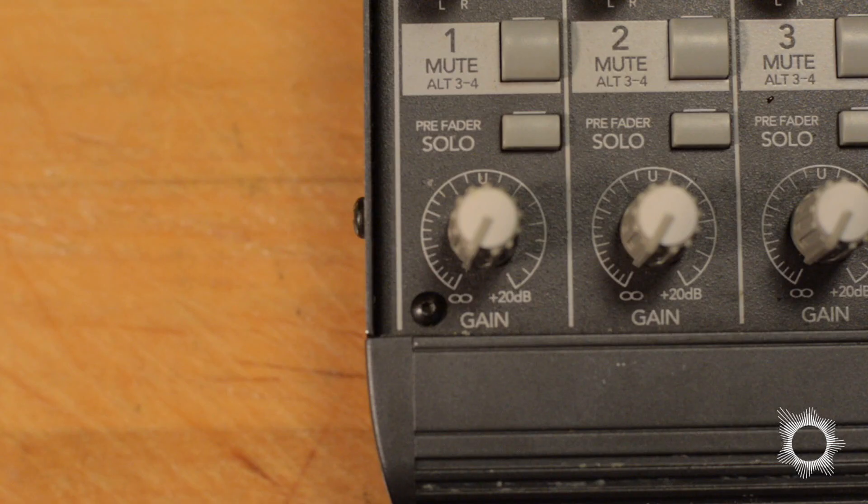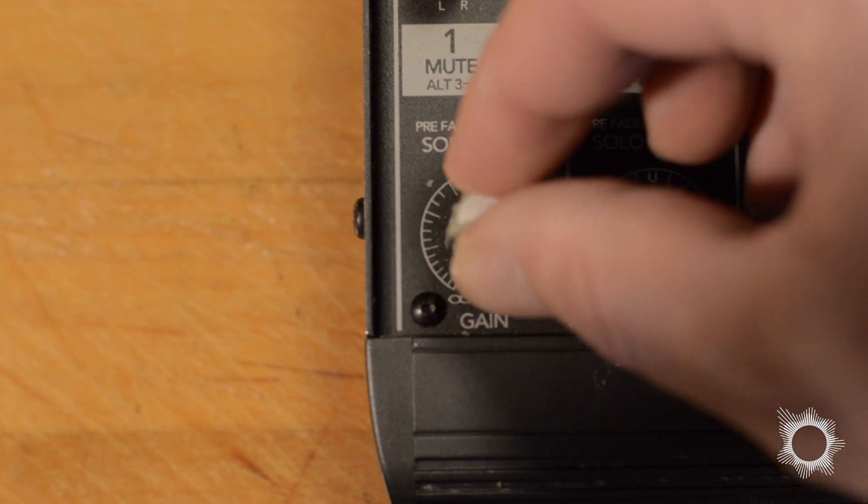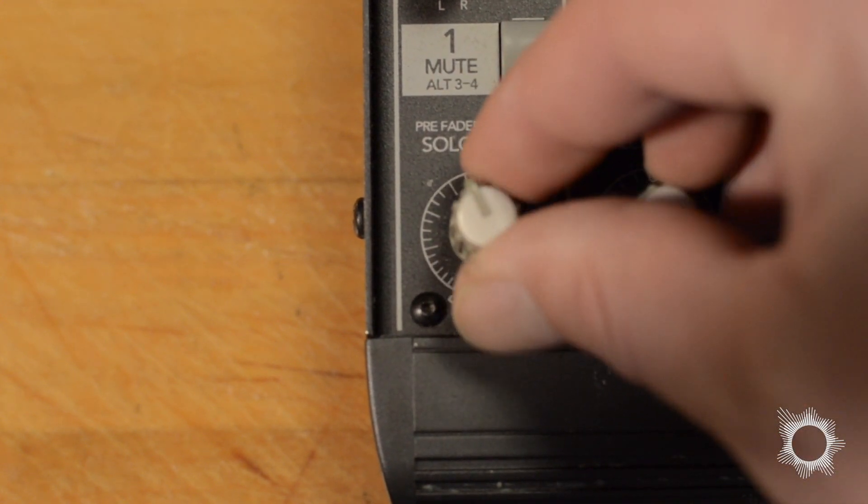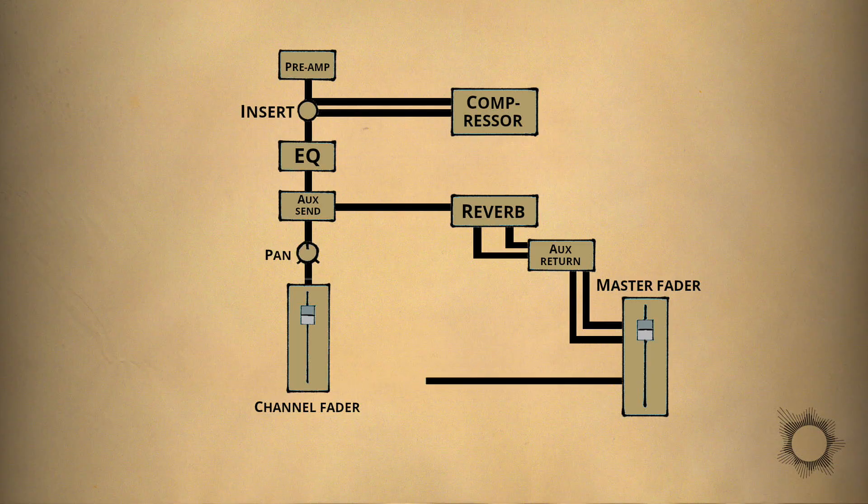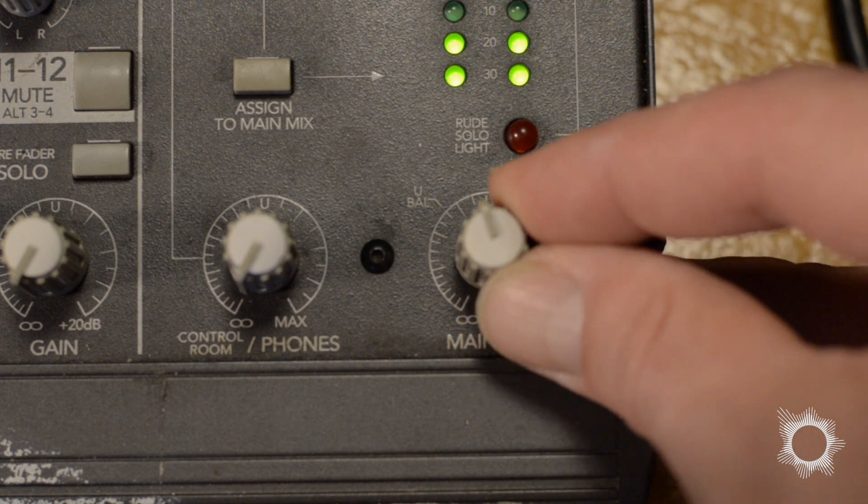The last control on a channel is a fader or volume control that specifies the amount of signal sent onwards relative to the other channels. The last stage of a mixer is the master fader where all the signals end up and are mixed together.